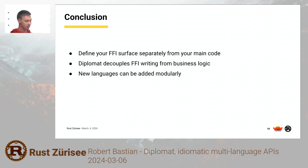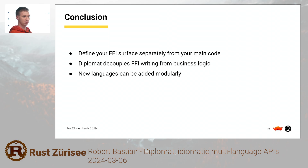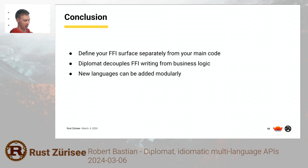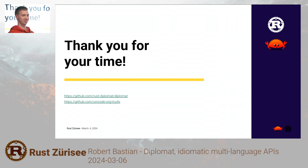So, my conclusion: with Diplomat we can define our FFI layer separately from our code, which is super convenient. We have a very nice idiomatic Rust library, and then a wrapper crate that uses the safe subset and does the FFI. It also decouples writing the FFI from our business logic — internationalization — which is great. We have some experts on the team who spend a lot of time on this FFI stuff, but we also have people who have no idea how any of this works, and they can still write a C++ library by just writing the Rust library. We can add languages one by one — I recently added Dart because we want to expose our library there, and it's not that much work once the whole core thing is there. Any questions? Thank you.